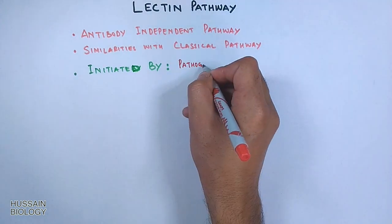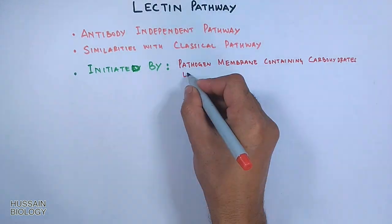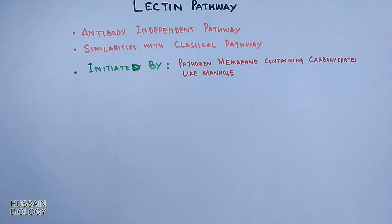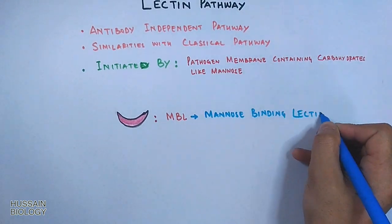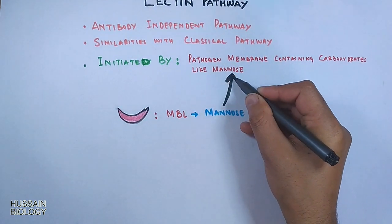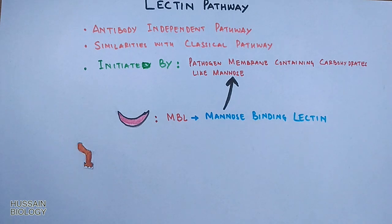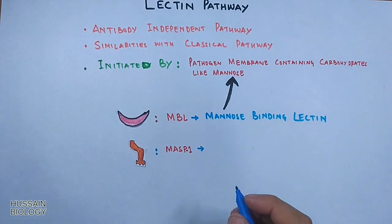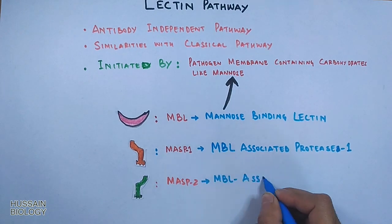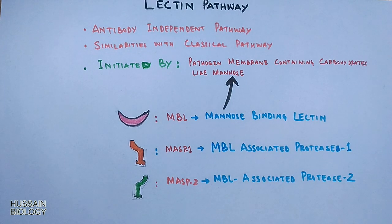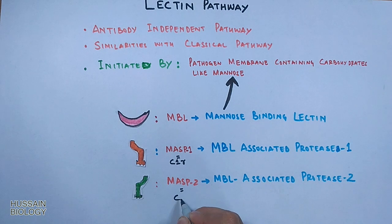It is initiated by pathogen membrane containing carbohydrates like mannose. This lectin pathway has several components: MBL (mannose-binding lectin), which binds to mannose on the pathogen; MASP1 (MBL-associated protease 1); and MASP2. MASP1 is analogous to C1r of the classical pathway, while MASP2 is analogous to C1s of the classical pathway.